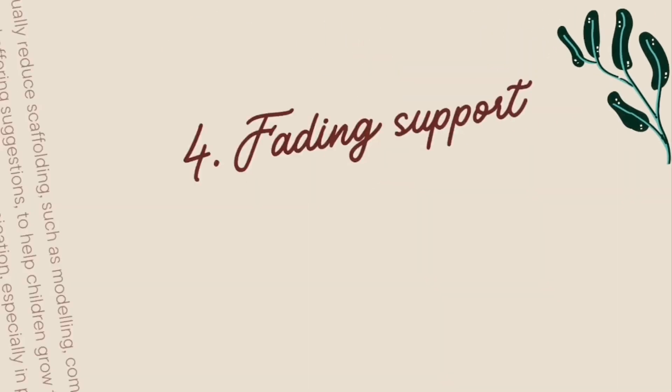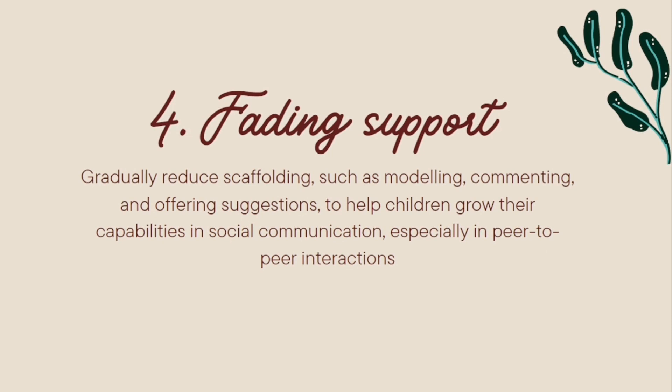The fourth strategy in descriptive linguistics is fading support. When we say fading support, it is a gradually reduced scaffolding — such as modeling, commenting, and offering suggestions — to help children and students grow their capabilities in social communication, especially in peer-to-peer interactions. So to recap, we have four strategies: first, commenting; second, interpreting; third, modeling; and the fourth one is fading support.